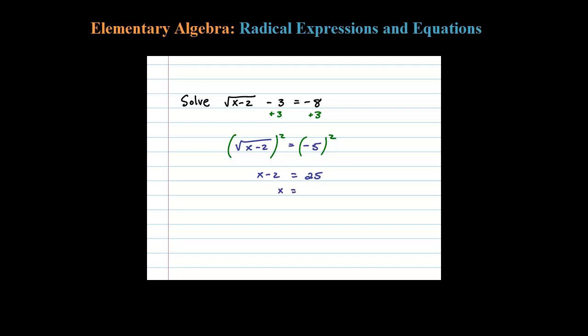But remember, you have to check your answers. When you square both sides, you introduce the possibility for extraneous solutions. So let's plug in 27 into the original equation: square root of 27 minus 2, minus 3 is supposed to equal negative 8.